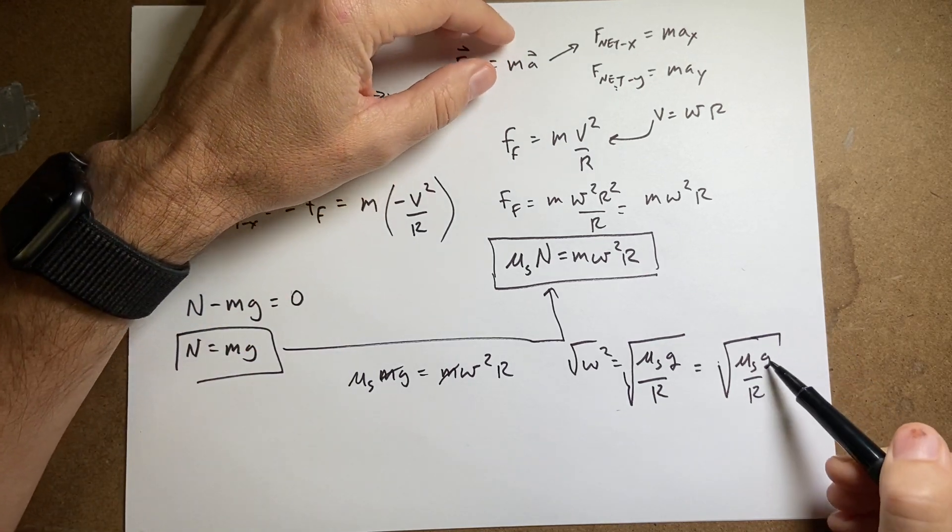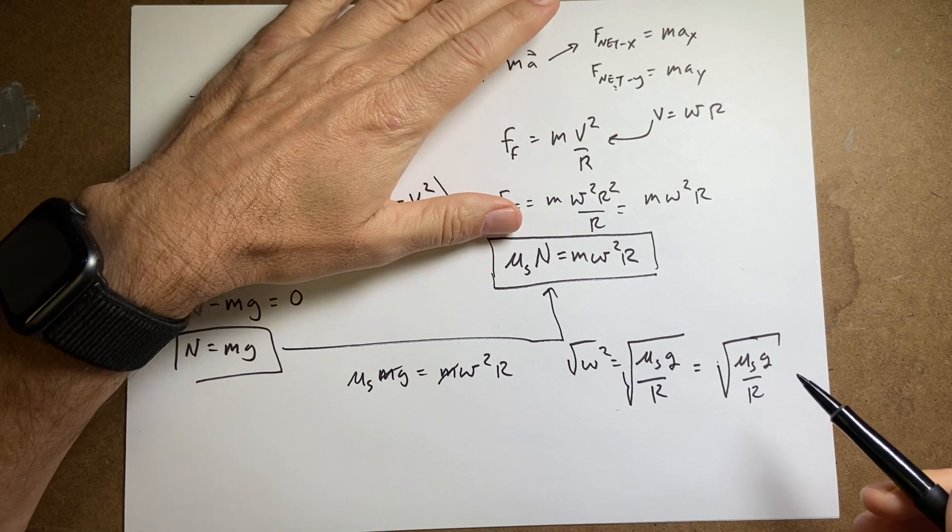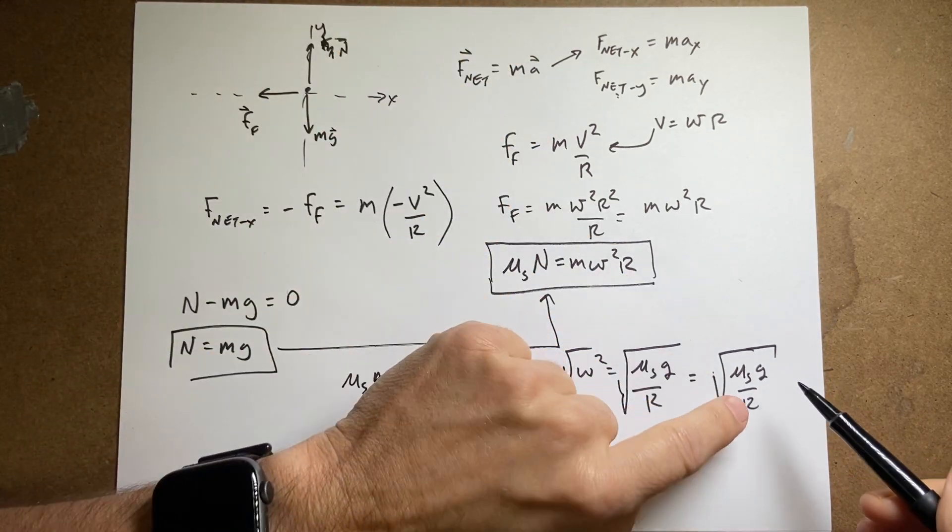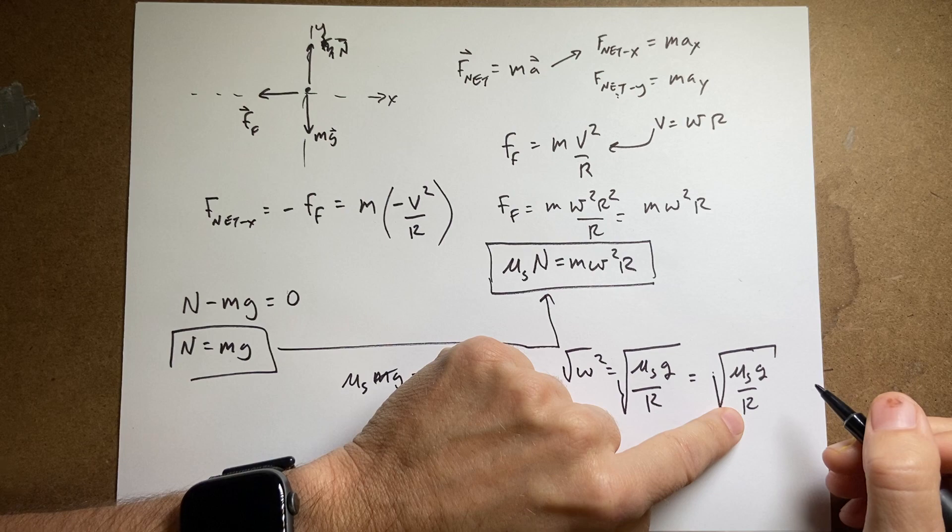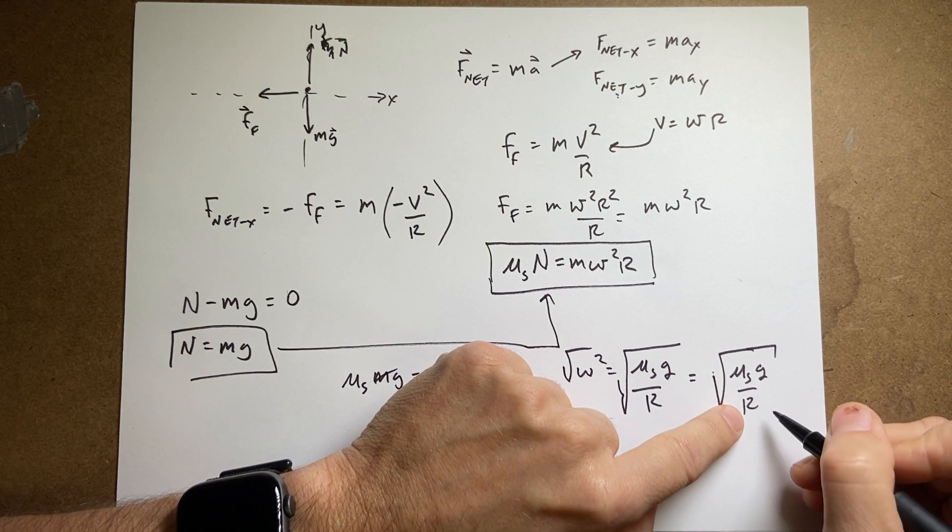And I get the square root of mu s g over r. And let's just check real quick. So the units for g are newtons per kilogram. But a newton per kilogram is also a meter per second squared. And the coefficient of friction has no units. And if I divide that by meters, I get no units.